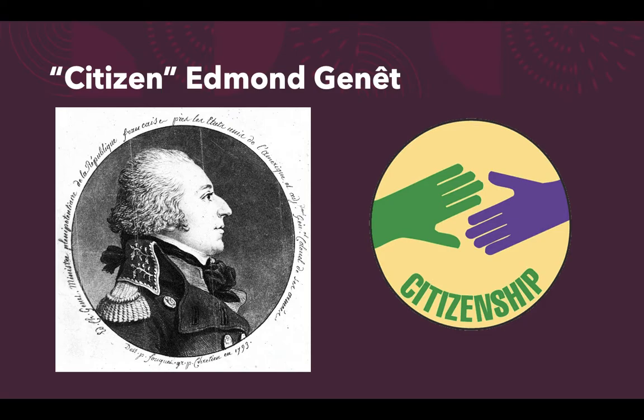Federalists called Genet's actions a pretty radical move — how dare the French treat us this way. Jefferson, on the other hand, supported Genet and wanted to give him asylum. These events caused a great rift in Washington's cabinet, and Jefferson ultimately resigned from his position as Secretary of State in 1793 over this scandal involving Citizen Genet.